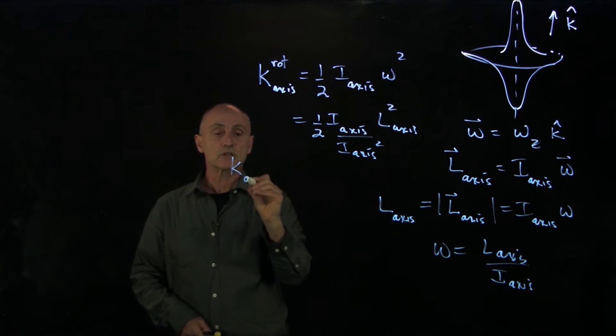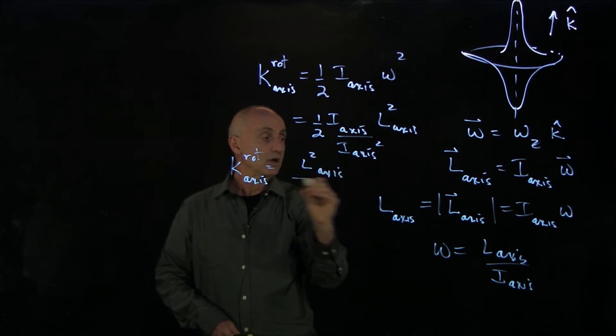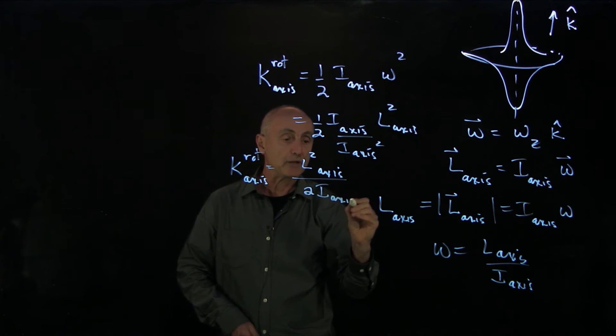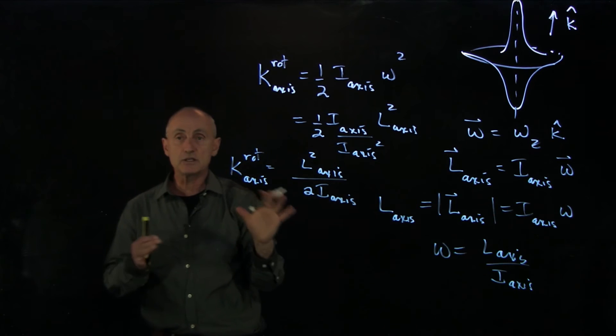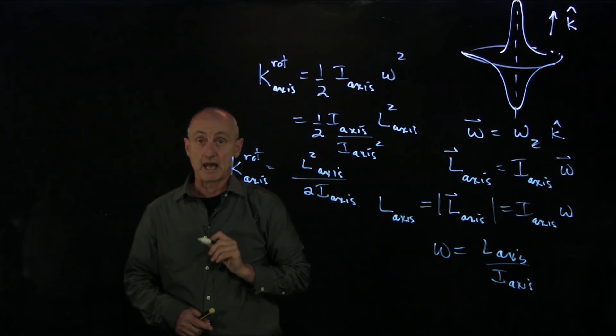And so we have a nice expression for the rotational kinetic energy: L squared about that axis over 2 times the moment of inertia about that axis. And this we can describe as the kinetic energy of a symmetric body about a fixed axis.